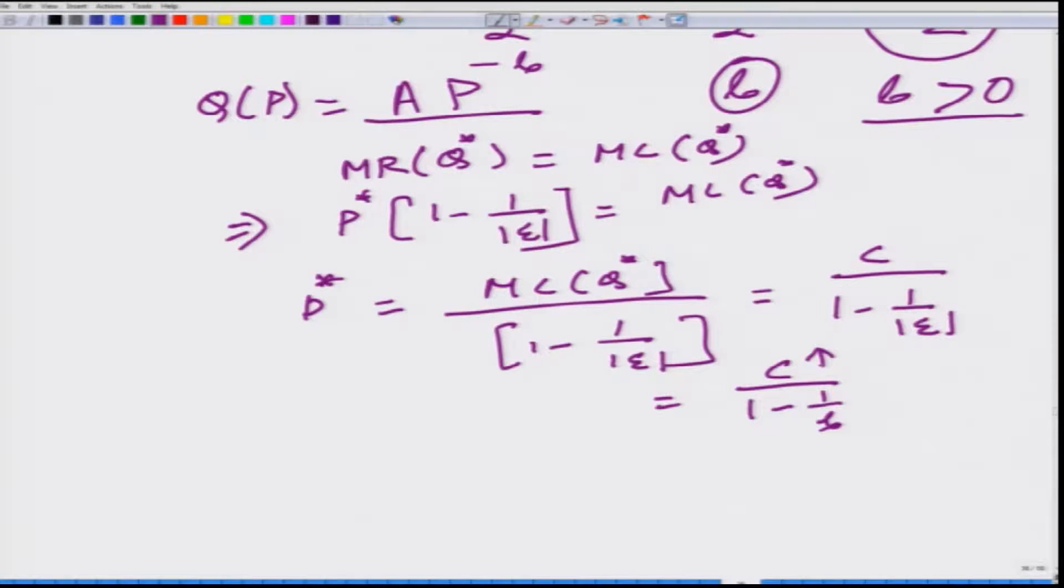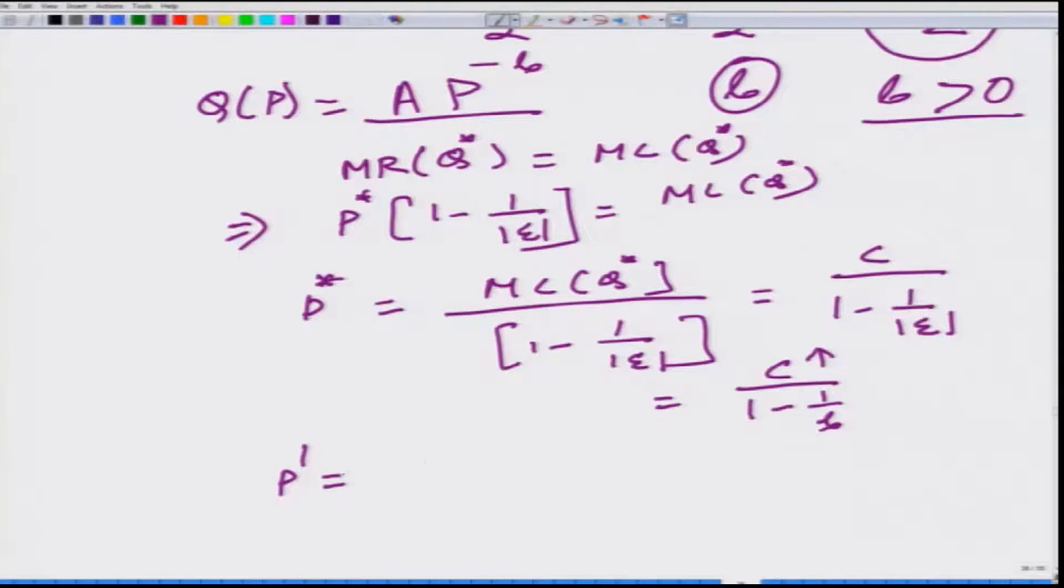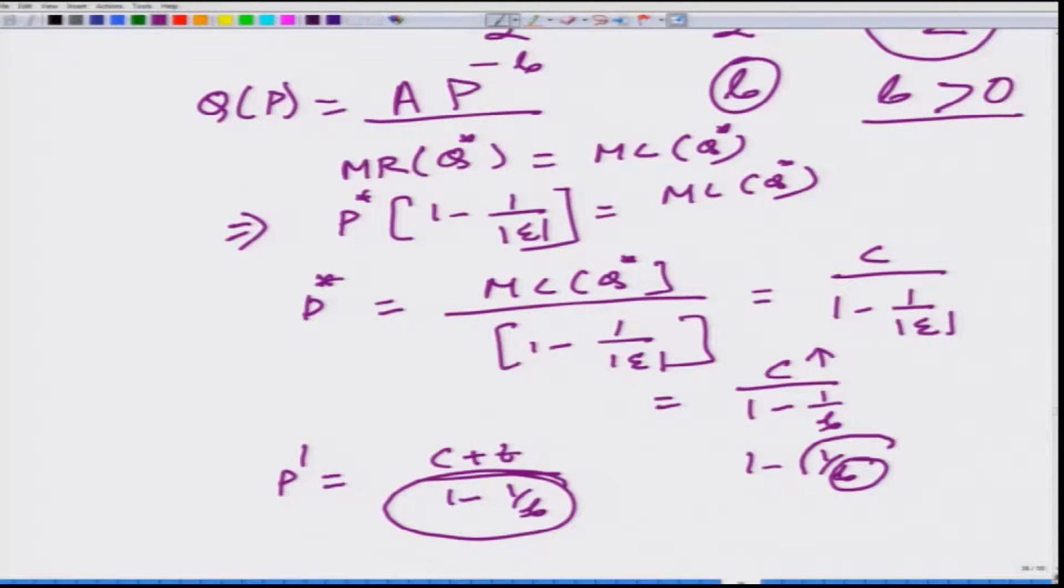Now if c goes up, like in the previous example, if c goes up to c+t, let us see what happens. So P' is going to be equal to (c+t)/(1-1/b). If you pay attention to the denominator, the denominator is 1-1/b. We are assuming that demand is elastic, it has constant elasticity everywhere. What it means is that b is greater than 1, therefore 1/b is less than 1, and therefore 1-1/b is less than 1. So this denominator is less than 1.